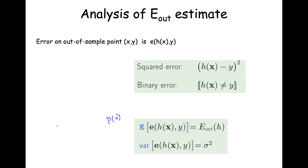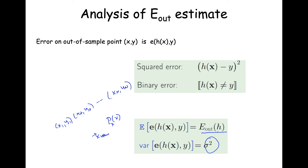When we take the expectation of our error measure for the hypothesis with respect to each data point x from our in-sample data — the expectation with respect to all possible data given the distribution p of x — that gives us the out-of-sample error for the hypothesis. The probability distribution p of x gives you both the in-sample label-instance pairs (x1, y1), (x2, y2), up through (xN, yN), as well as new data points not yet seen. The expectation of the error measure equals the out-of-sample error, and the variance sigma squared is a constant.